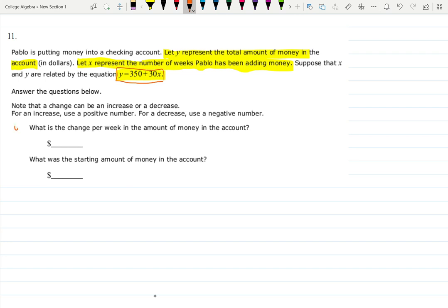What is the change per week in the amount of money in the account? And for question B, what was the starting amount of money in the account?